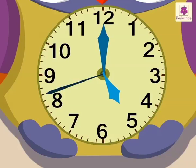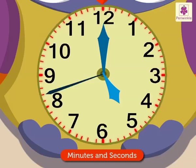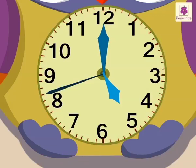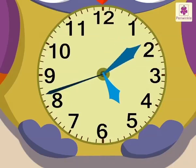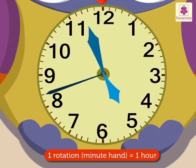There are 60 markings around the face of the clock. These markings tell us the time in minutes and seconds. The minute hand moves from one such marking to another every minute, and it completes one rotation in one hour.